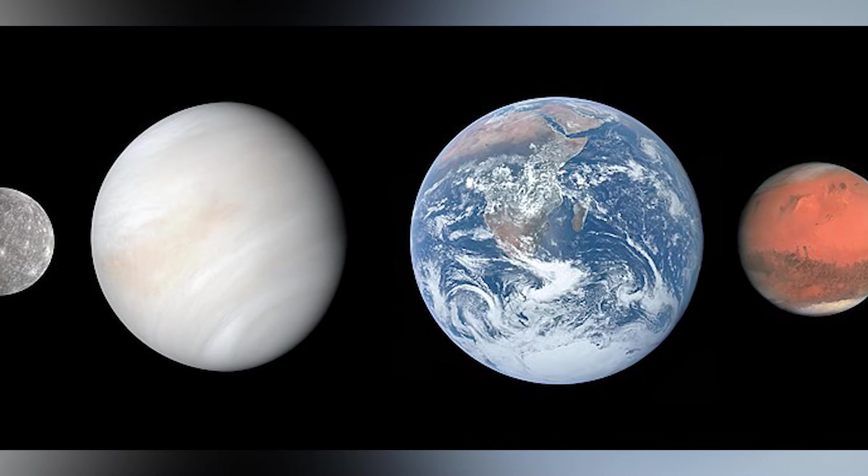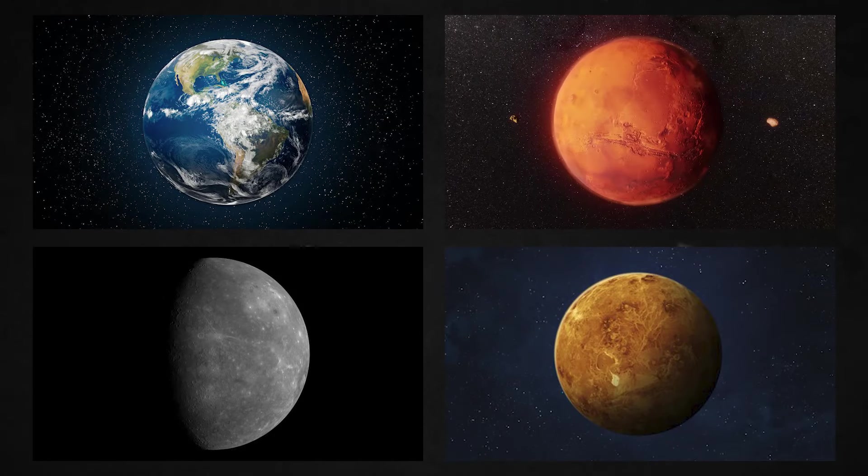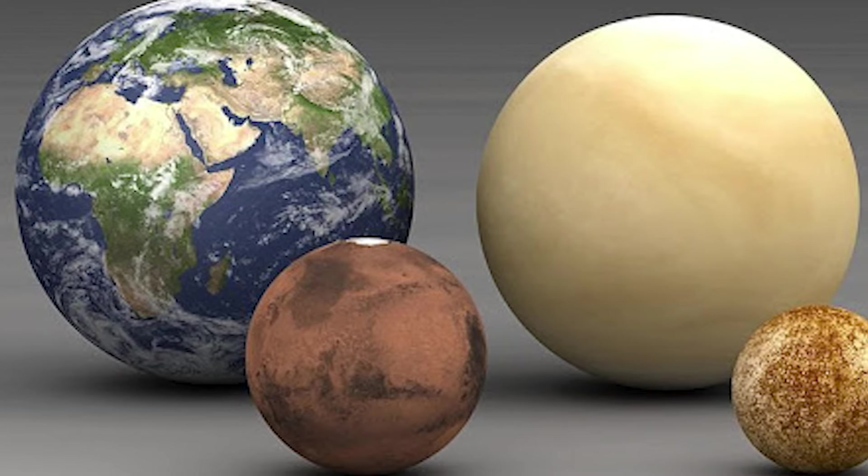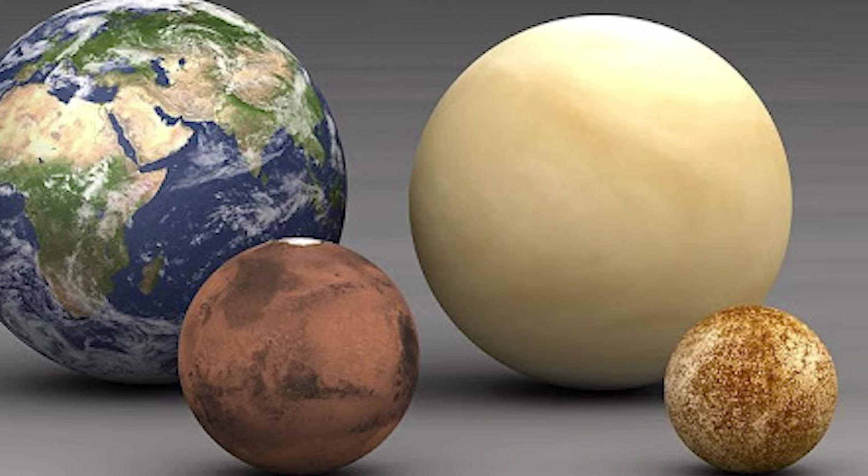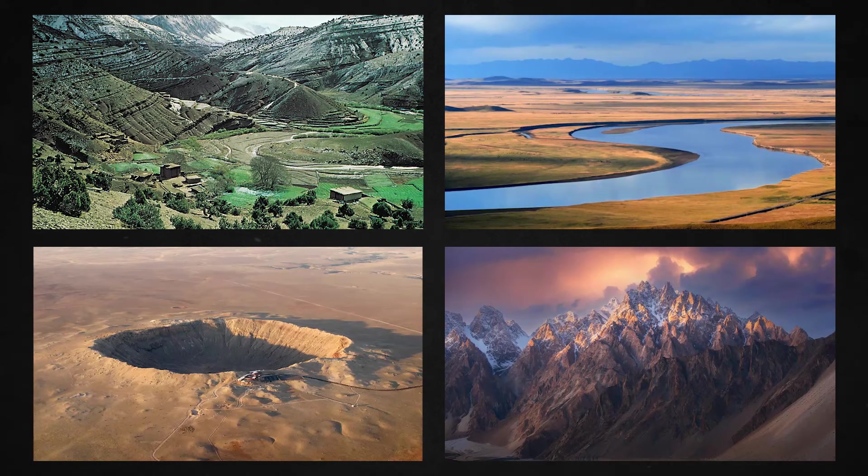The first group is terrestrial planets or inner planets. These are planets like Mercury, Venus, Earth and Mars that have solid surfaces. Also called rocky planets, they are relatively smaller in size compared to the gas giants. These planets are primarily composed of rock and metal and have thin atmospheres except Earth, and diverse surface features such as craters, mountains, valleys and plains.